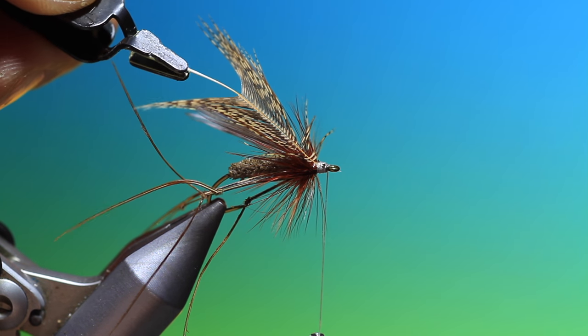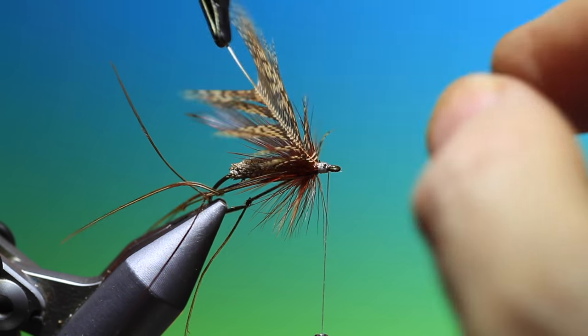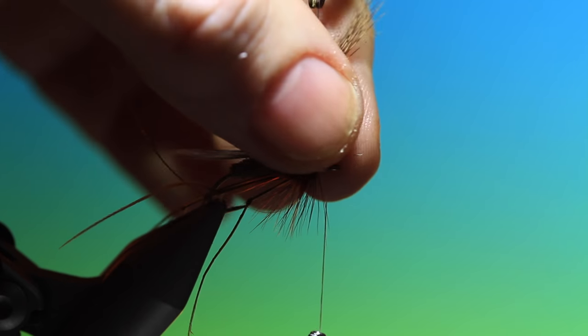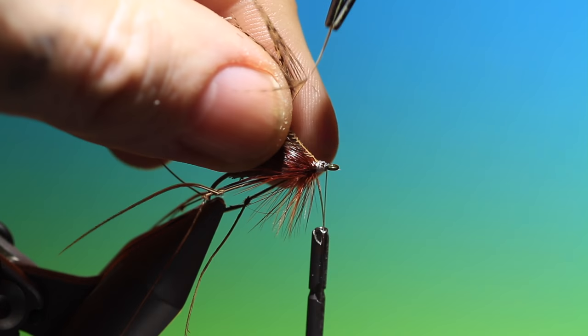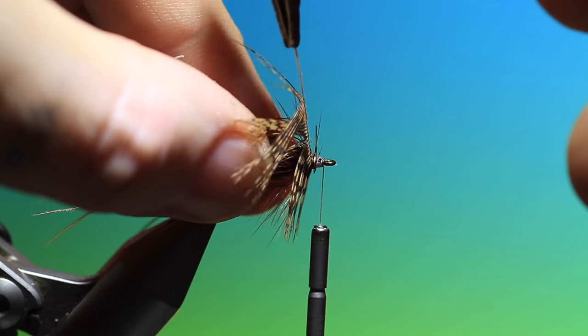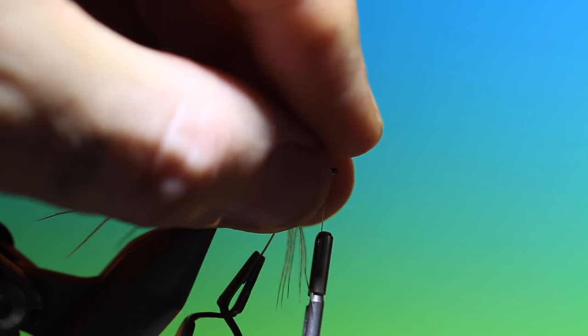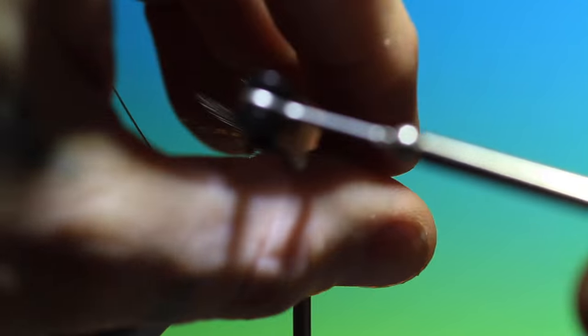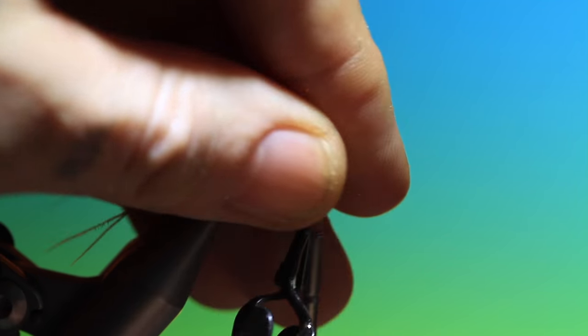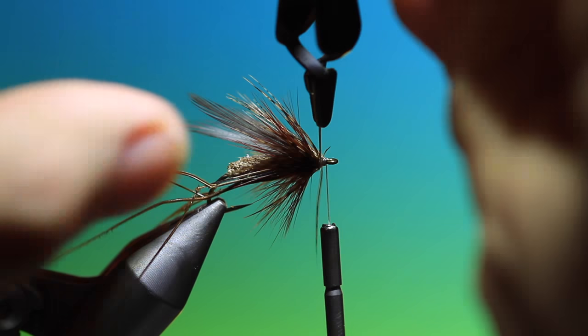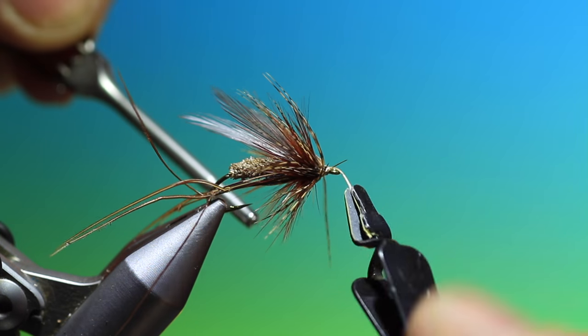Hackle pliers again. Onto the partridge hackle. And again I want this to be pulled back. And this will be the front hackle. I think this just adds something special to it. Partridge always works well I think in dry flies. Tie that off.